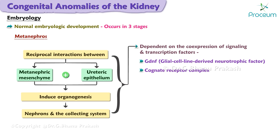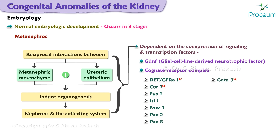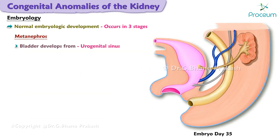These signaling and transcription factors include, but are not limited to: glial cell line-derived neurotrophic factor and its cognate receptor complex RET or GFRα1, OSR1, EYA1, ISL1, FOXC1, PAX2, PAX8, GATA3, LIM1, GDF1, GDF11, SALL1, SIX1, BMP4, and WT1.